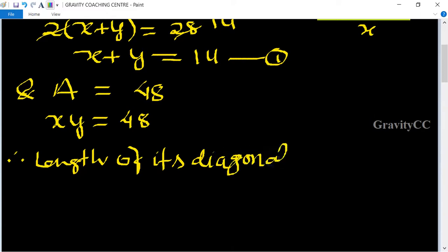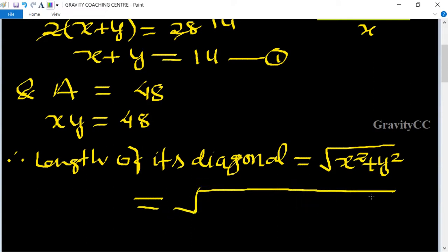we know that its formula is root under x square plus y square. We use the identity x square plus y square equals x plus y square minus 2xy